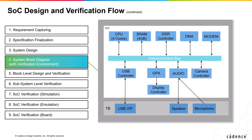This slide shows the system block diagram based on the items required in the third step. All required items are shown along with their logical connections. The various blocks connected through the interconnection bus are: CPU, SRAM, DDR controller, DMA, modem, USB controller, GPU, audio, and camera controller. The display controller block, connected to the GPU or graphic processor, is also shown. The verification blocks used to test the design blocks are shown inside the test bench, which contains a USB verification IP, speaker, and microphone. USB VIP is connected for USB controller testing, and the speaker and microphone are connected for audio block testing.